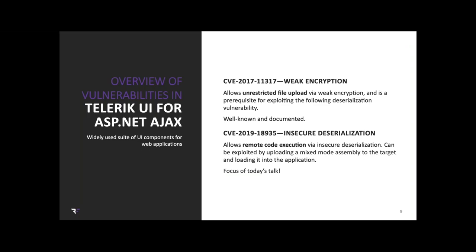There are two vulnerabilities at play here in Telerik UI for ASP.NET AJAX. The first is an unrestricted file upload vulnerability via weak encryption — it's a well-known, well-documented vulnerability, but it's a prerequisite in order for us to exploit insecure deserialization, through which we can get remote code execution. That latter bug — the insecure deserialization bug — is the focus of today's talk.